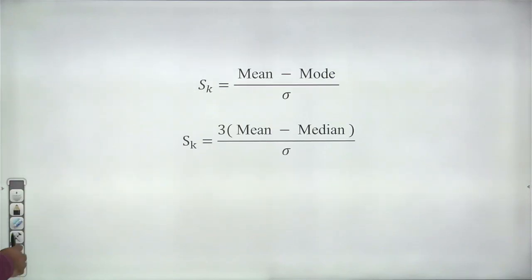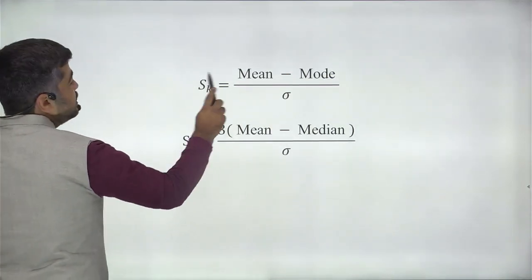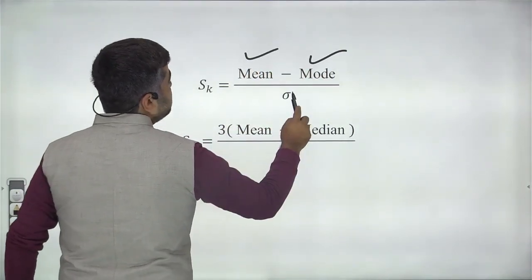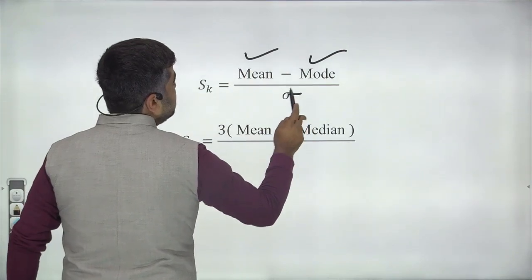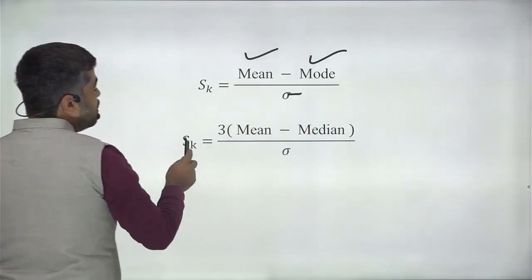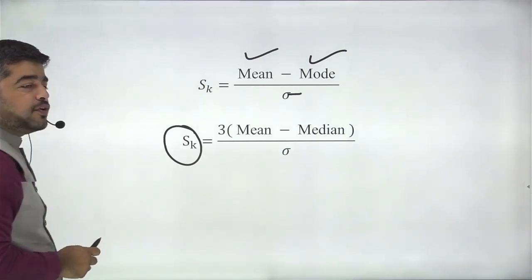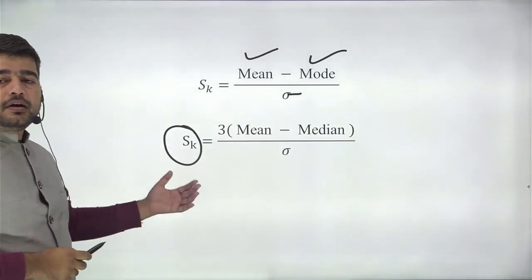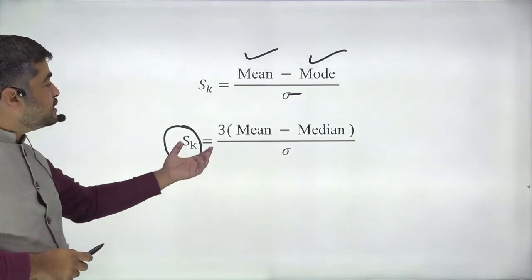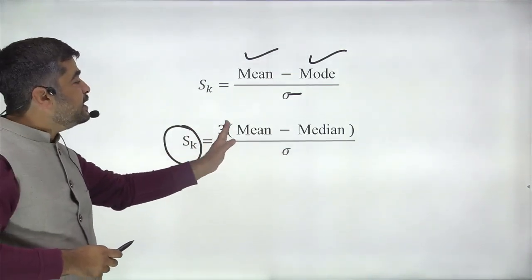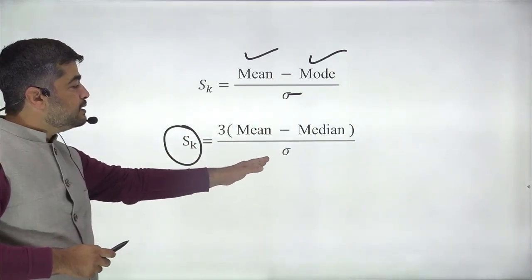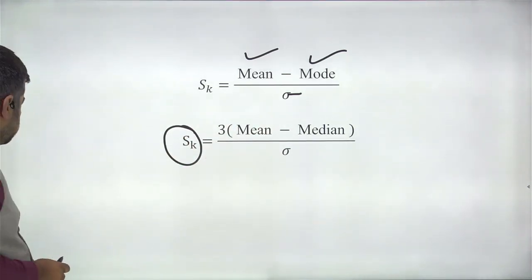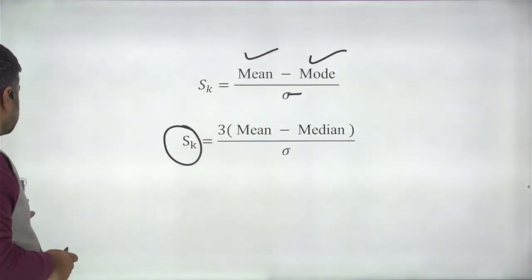You should know the two formulas for coefficient of skewness. The first formula is: (mean minus mode) divided by standard deviation. The second formula is: 3 times (mean minus median) divided by standard deviation.